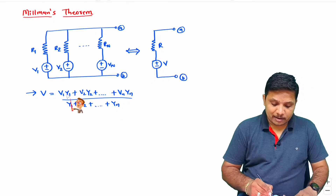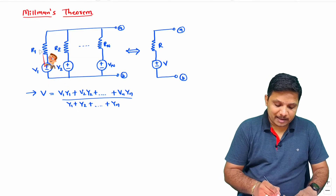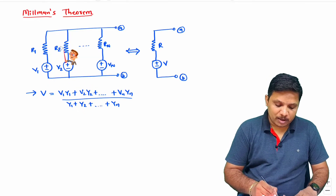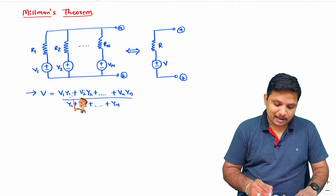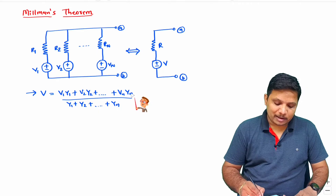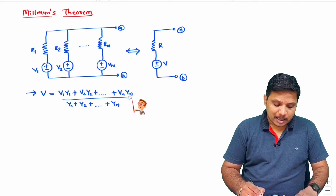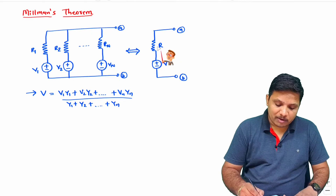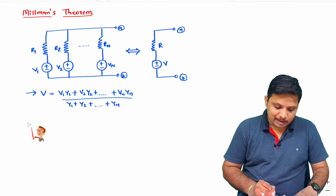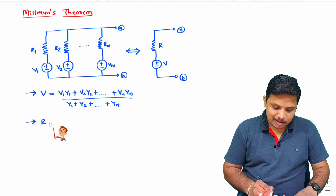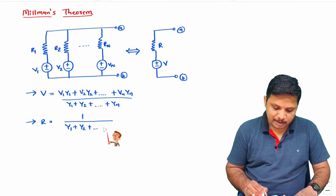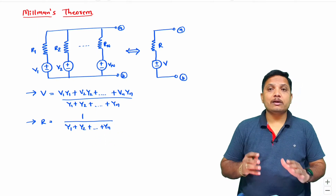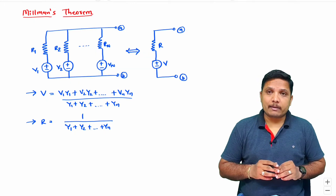Here Y1 is 1 divided by resistance R1, Y2 is 1 divided by resistance R2, and Yn is 1 divided by resistance Rn. So Y1, Y2, Yn are admittances. Now if you want to have the value of R, then that value of R will be 1 divided by Y1 plus Y2 plus up to Yn. So this is Millman's theorem.